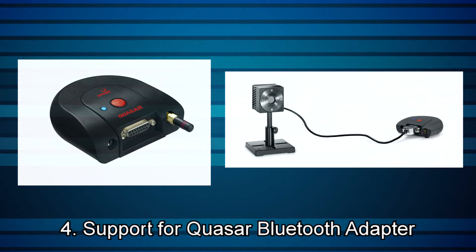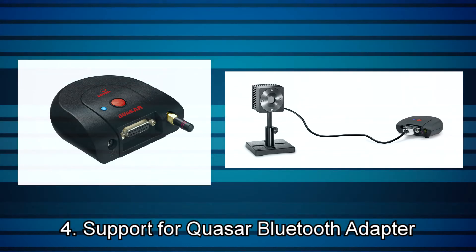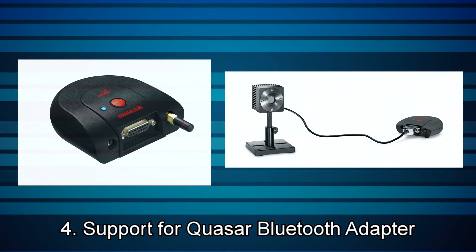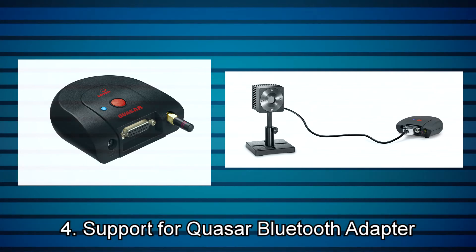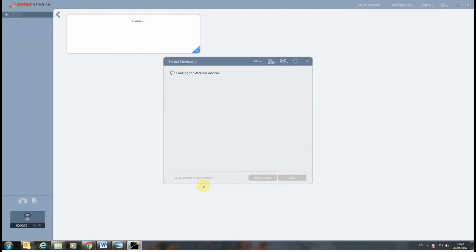4. Support for the Quasar Bluetooth Adapter. Quasar is a wireless PC interface that connects a sensor to a PC by Bluetooth, which is a proven and popular interface. The Quasar has been approved by the FCC and other regulating authorities around the world. Using the Quasar enables working in environments where cables are impractical — for example, in areas which are supposed to be sealed, such as a high-power measurement chamber, glove box, or vacuum chamber, or where cable movement might ruin a delicate alignment, or in human-hostile environments where cables can't be accessed. The Quasar is now fully supported in Starlab 3.3.